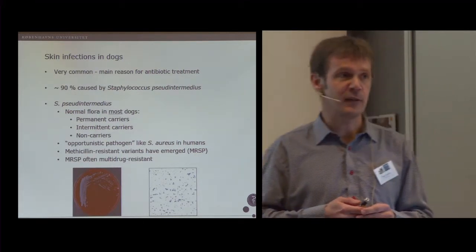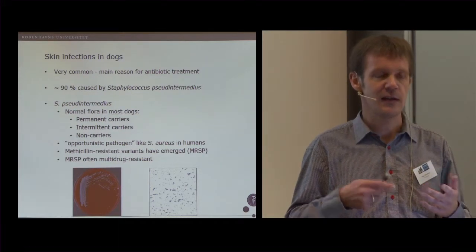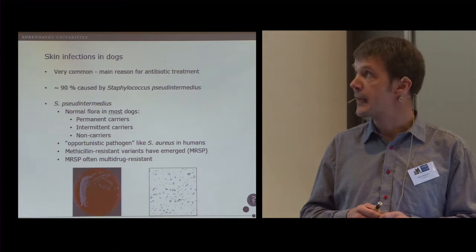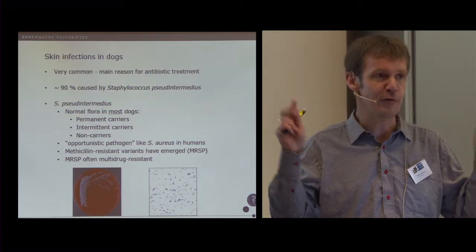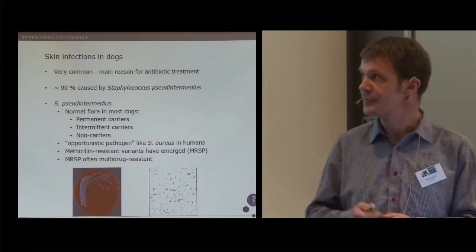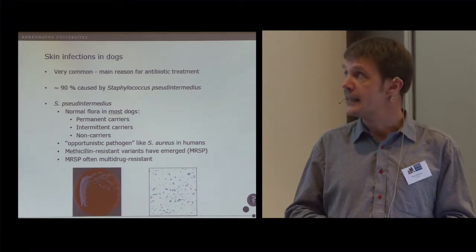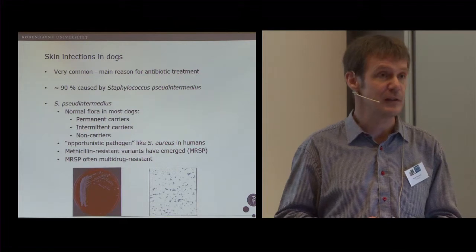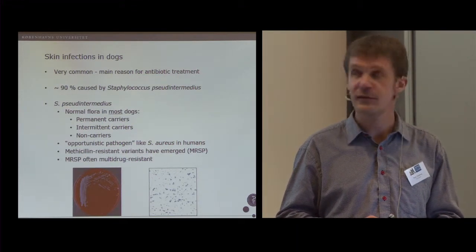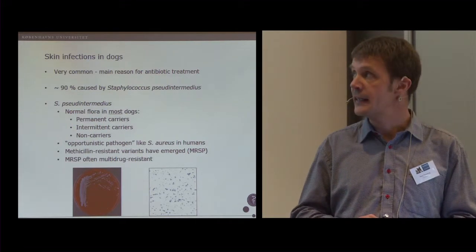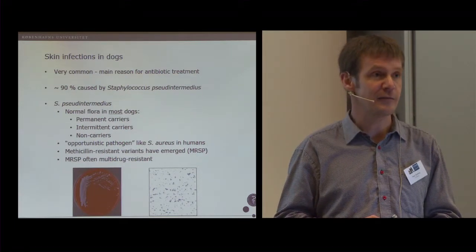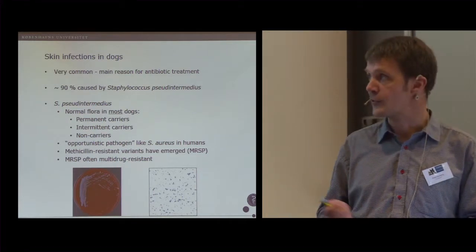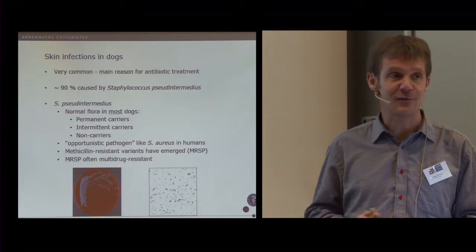Staphylococcus pseudintermedius is what we call an opportunistic pathogen. For example, when the dog is immunocompromised or if there is a breach of the skin barrier, it may cause infections, a bit like we see with Staphylococcus aureus in humans. You may say this is Staphylococcus aureus of dogs because it behaves more or less the same way. As you just heard, we have the MRSP that have emerged since the last decade or so, from 2005, and they have spread globally. They are quite difficult to treat because they can be resistant to a lot of different antibiotics, sometimes all the antibiotics we have for veterinary use. This is just to show what Staphylococcus pseudintermedius looks like on a blood agar plate.